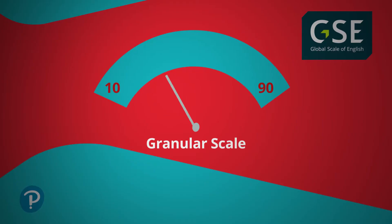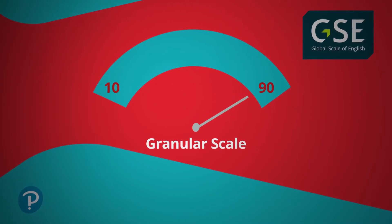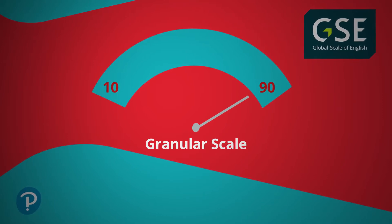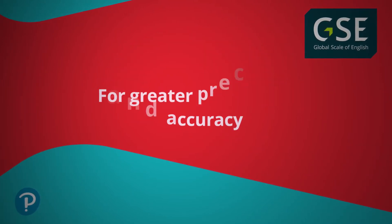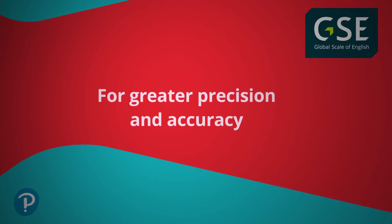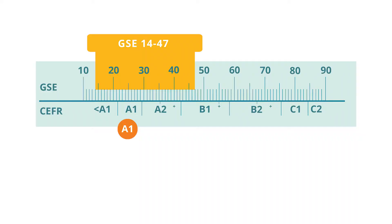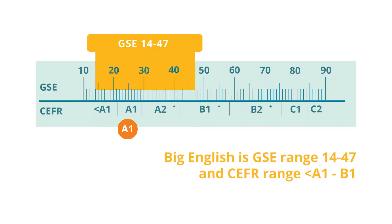There are two key differences between the Common European Framework and the Global Scale of English. The Global Scale of English is a granular scale from 10 to 90, which enables us to measure learner proficiency with more precision and accuracy, and enables a learner to know where they are within a Common European Framework level. The GSE learning objectives for young learners have been written specifically for young learners and have been rated for difficulty by teachers of young learners.